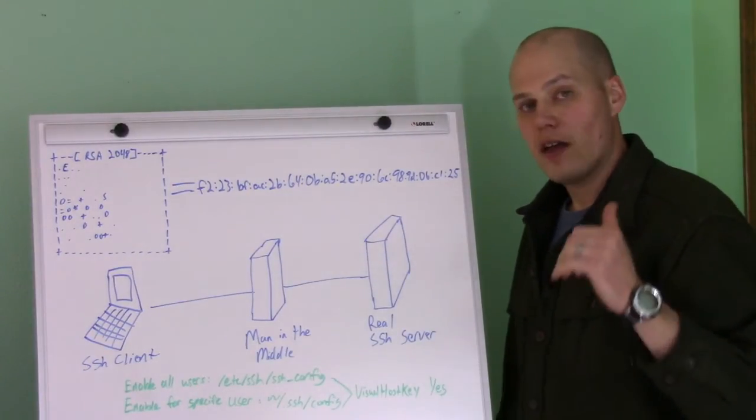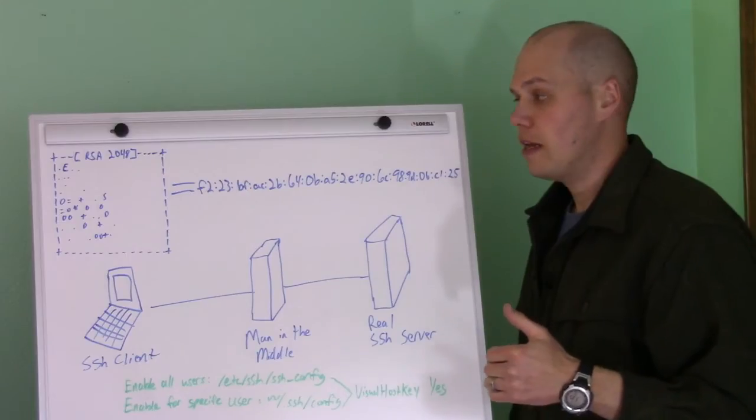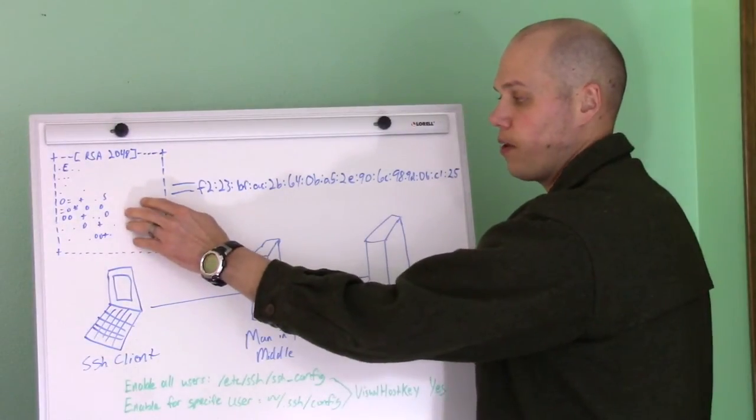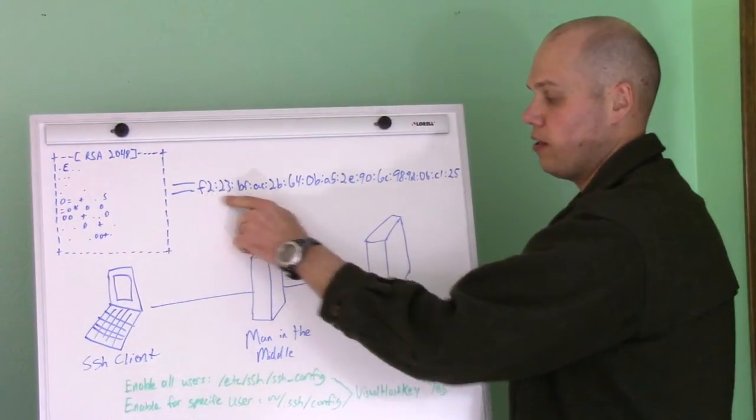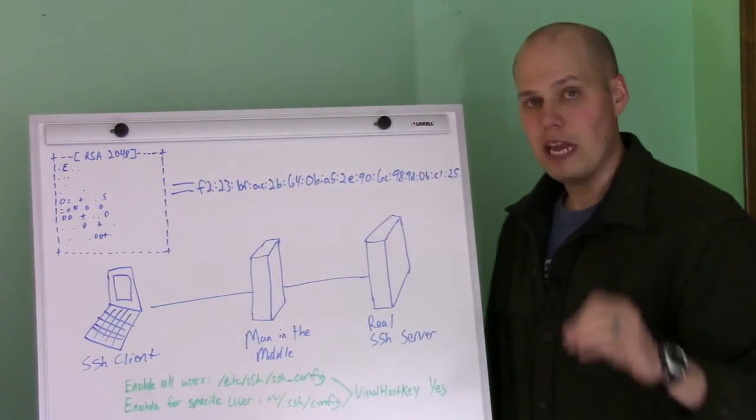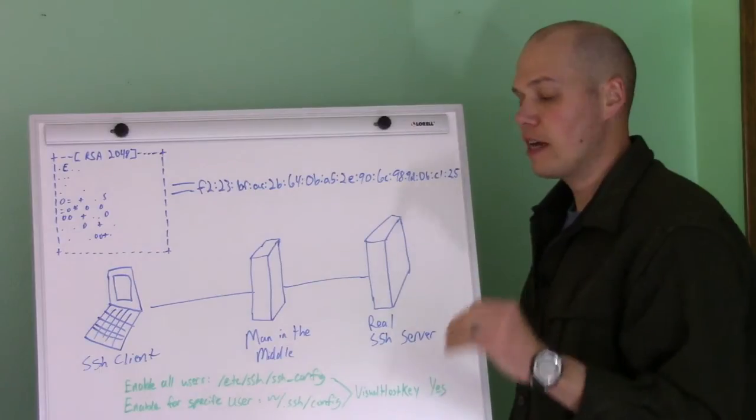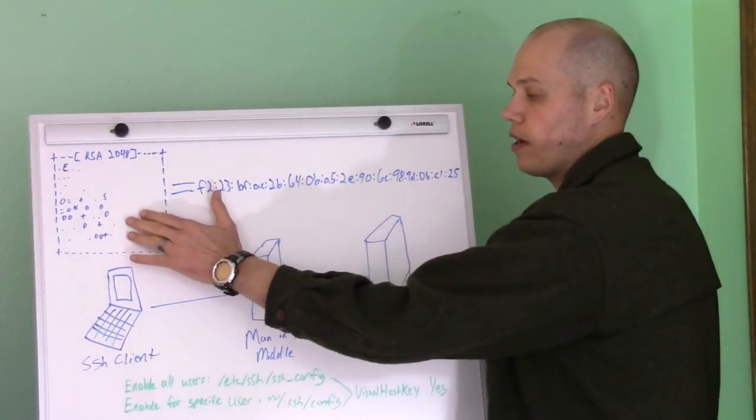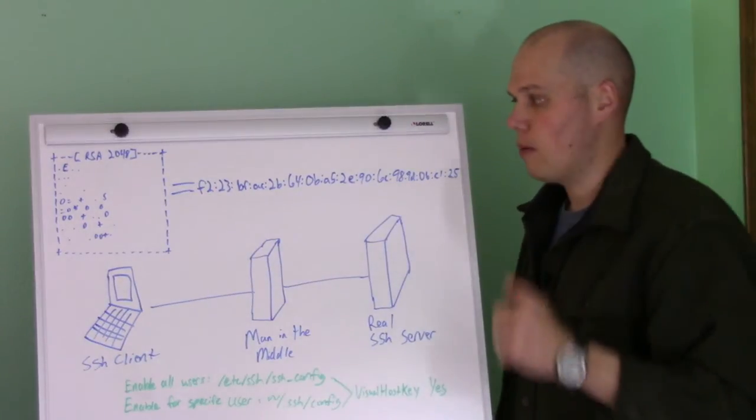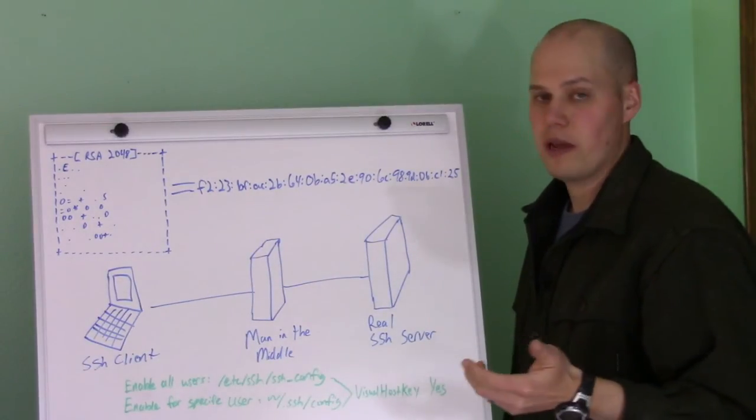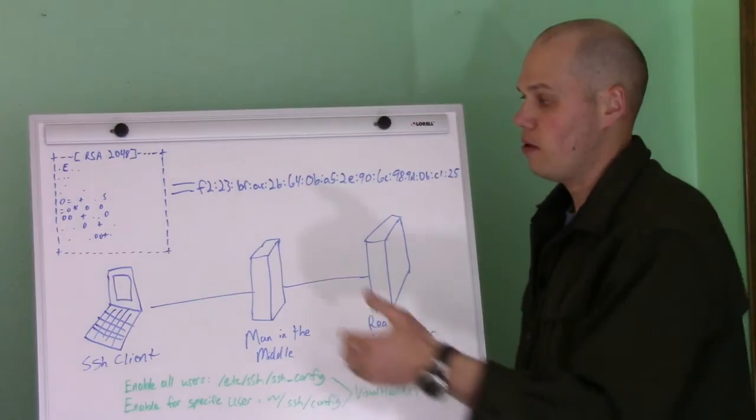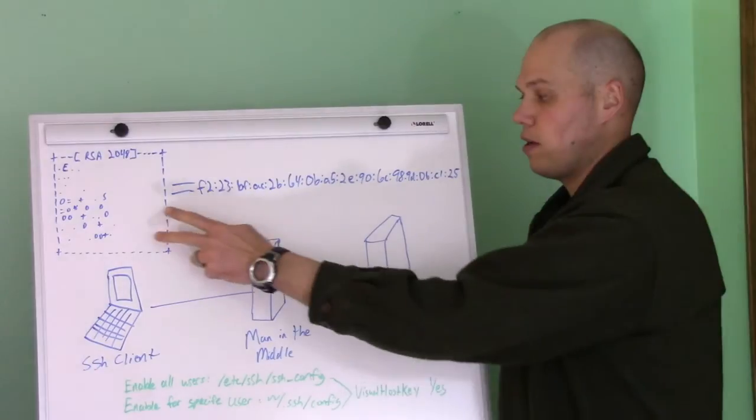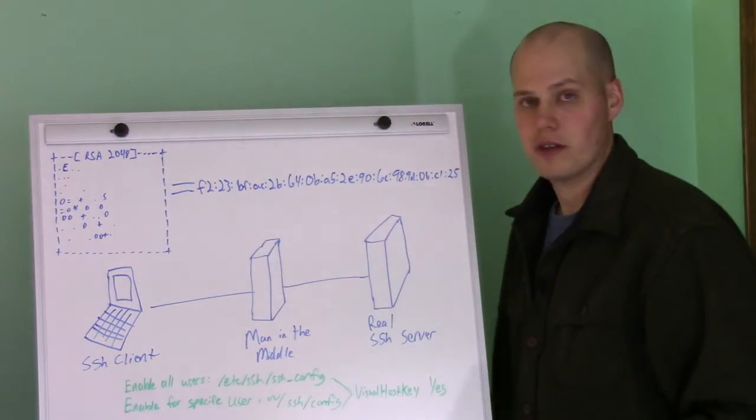So that's the basic theory behind the visual host keys. It's just easier for a human to get familiar with this and remember this than this big long key. And if you enable the feature, every connection you make to an SSH server, it will show you this every time you log in, so you can start memorizing what it looks like, just basically without even really thinking about it. People are just visual in nature, so they will naturally remember something they see every day if it's a visual picture like this.